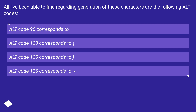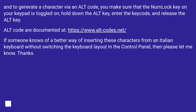All I've been able to find regarding generation of these characters are the following alt codes: Alt code 96 corresponds to backtick, Alt code 123 corresponds to open curly brace, Alt code 125 corresponds to close curly brace, and Alt code 126 corresponds to tilde. To generate a character via an alt code, make sure the Num Lock key on your keypad is toggled on, hold down the Alt key, enter the key code, and release the Alt key. Alt codes are documented at this URL. If someone knows of a better way of inserting these characters from an Italian keyboard without switching the keyboard layout in the control panel, please let me know.